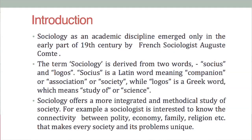Sociology as an academic discipline emerged only in the early part of the 19th century by the French sociologist Auguste Comte. He had coined the term Sociology in his book The Positive Philosophy in about 1839. The term Sociology is derived from two words — Socius and Logos — which means the study of, or the science of, association or society.